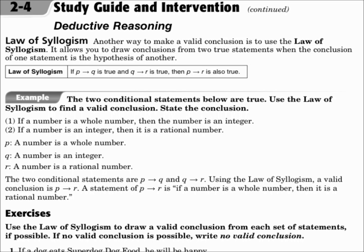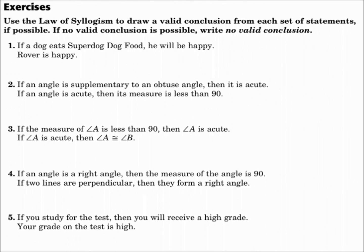It relates to that very closely, except we're talking about P's, Q's, and R's, and statements instead of values. Use the law of syllogism to draw a valid conclusion from each set of statements, if possible. If no valid conclusion is possible, write no valid conclusion.